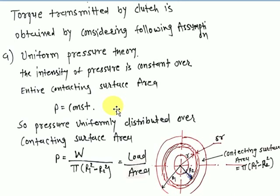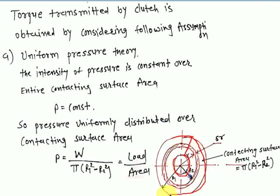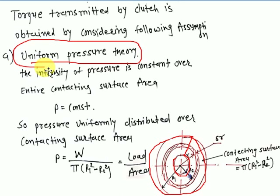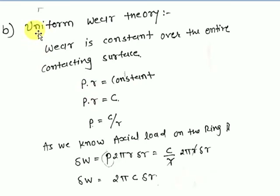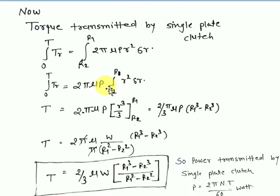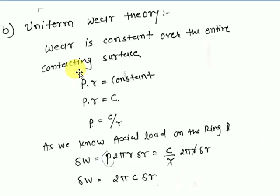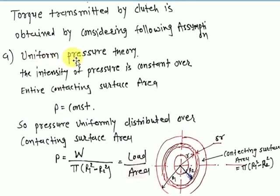There are two theories. When the clutch is brand new, we assume the pressure from inner to outer radius is uniform — this is the uniform pressure theory. If the clutch has been in use for some months or a year, due to bending of the plate or wear, we use the uniform wear theory. We need to find the torque equation using both theories.